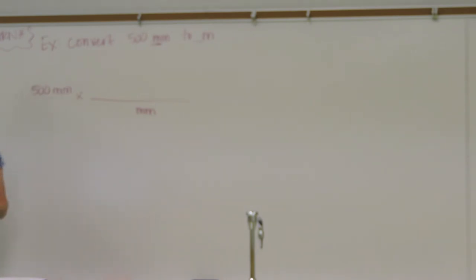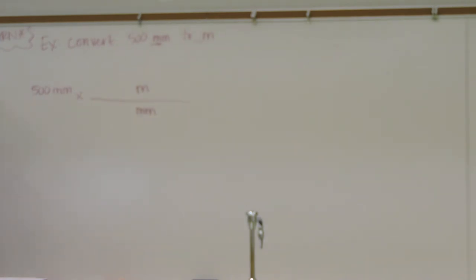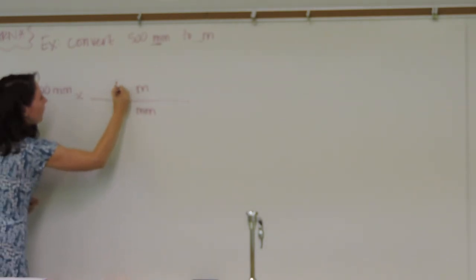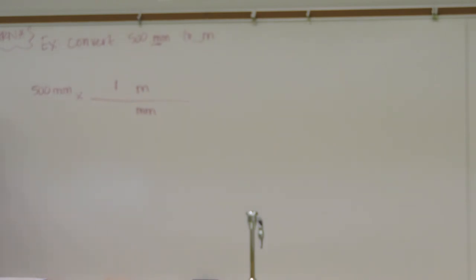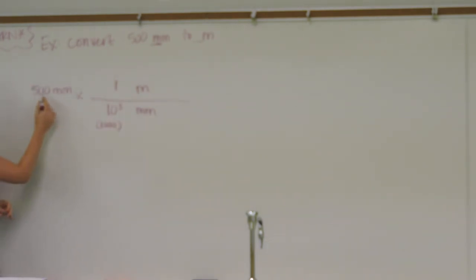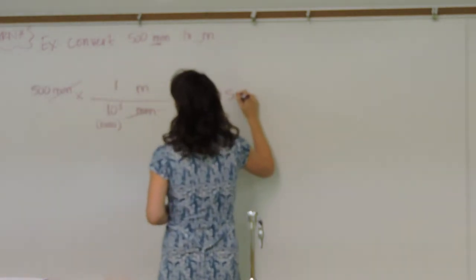We're trying to convert to meters — that's why it goes on top. Now, what number goes with each one? Meter is base, so the number associated with base is 1. The number associated with milli is 10 to the 3rd — or 1,000. So: 500 times 1 divided by 1,000. When I divide by 1,000, moving the decimal 1, 2, 3 places — that's 0.5 meters.